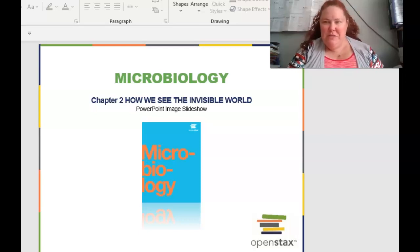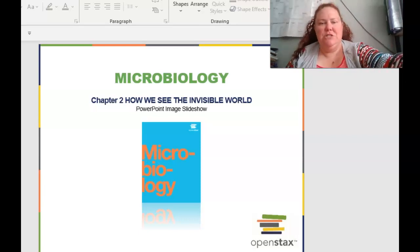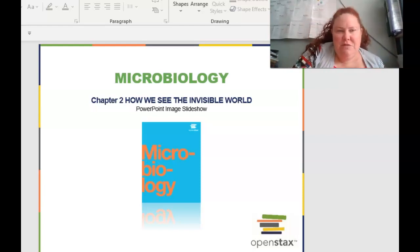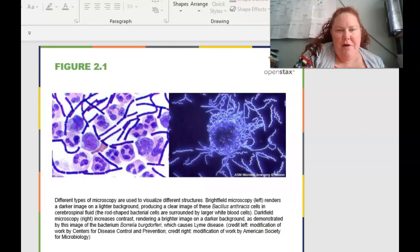Welcome to Biochem 2.0 with the new textbook. This is chapter 2, which is how we see the invisible world. So basically, there are different types of microscopy that we can use to visualize different structures.